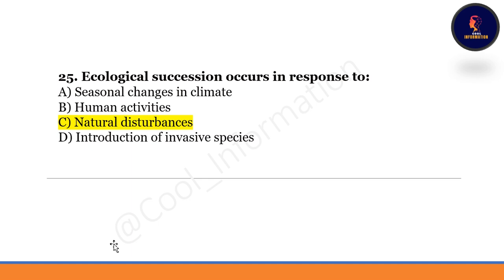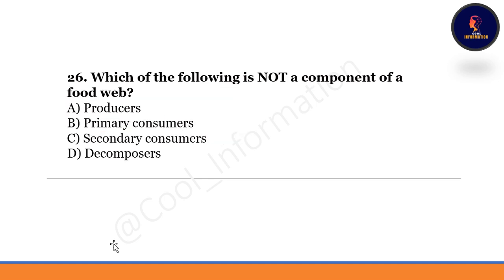Which of the following is not a component of a food web? Decomposers is not a component of food webs. Producers, primary consumers, and secondary consumers are the components of the food web. So option D is correct.